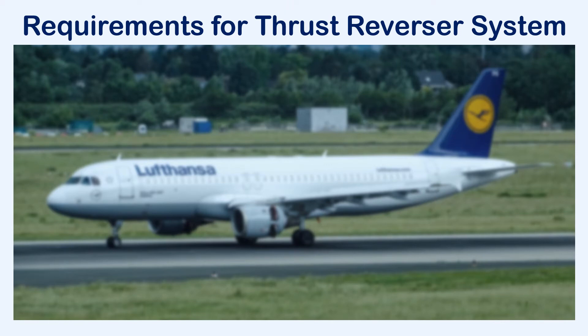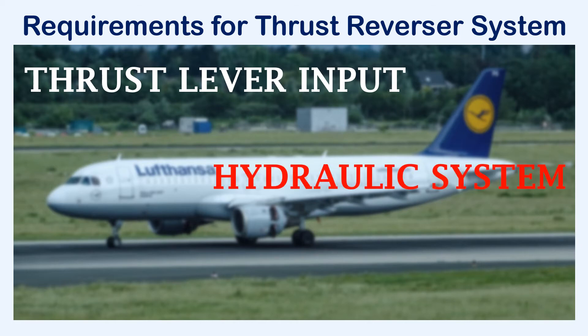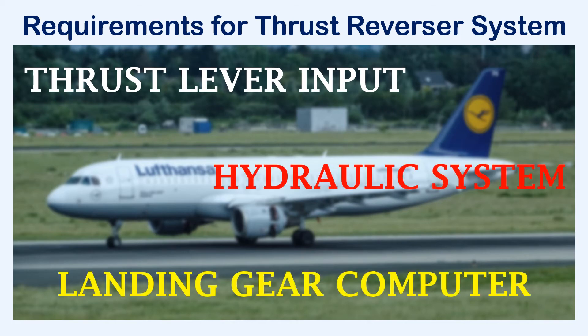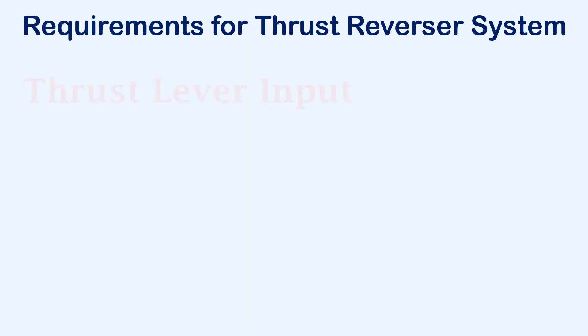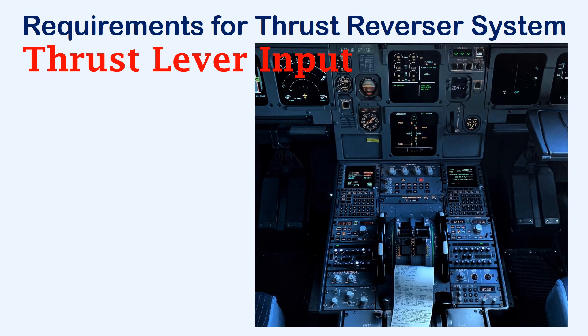Now let's see what are the requirements for the thrust reverser system. For the thrust reverser system to operate, thrust lever input from the cockpit, a hydraulic system, and a signal from the landing gear computer are required. In the cockpit, to deploy the thrust reversers, the thrust lever has to be brought to idle and then pulled further back. In some aircraft, a separate lever may be provided to set reverse thrust.